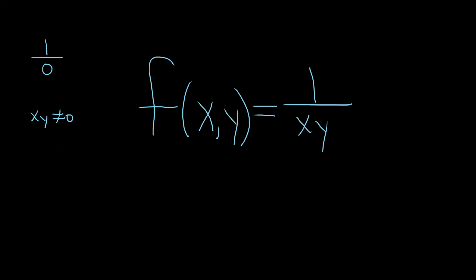We can be a little bit more precise than this. The only way it will be 0 is if x is equal to 0 or if y is equal to 0. So the only way it won't be 0 is if neither of them is 0, because if one of them is 0, the whole thing is 0. So we can't let any of them be 0.